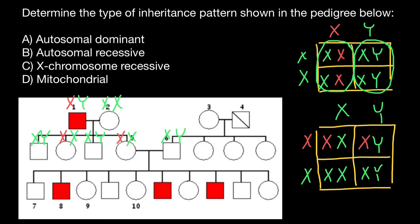All the female children of this couple are going to be phenotypically normal — all girls here are phenotypically normal. 50% of them are going to be carriers. And 50% of the male progeny are going to manifest this genetic disorder, while 50% would be phenotypically normal. This is exactly what we see here: out of six male children, three do not have this genetic disorder and three do. So the distribution or proportion is one to one.